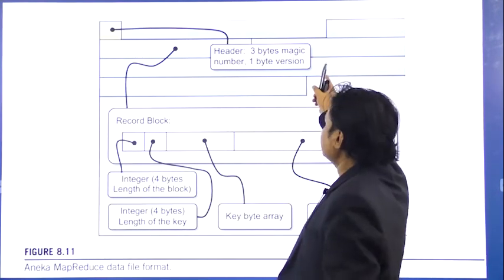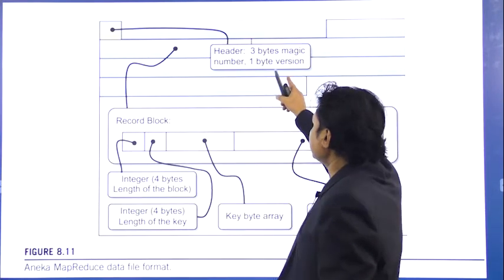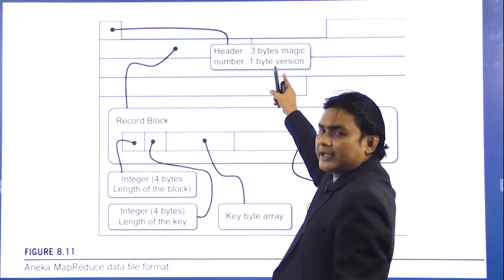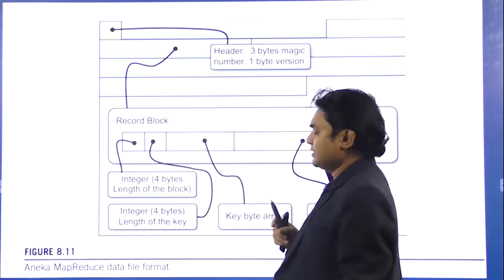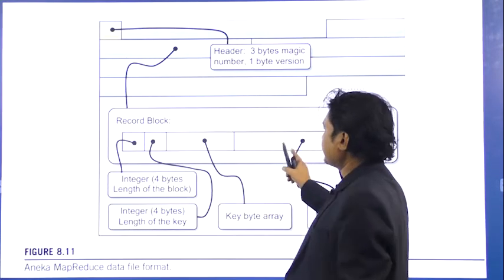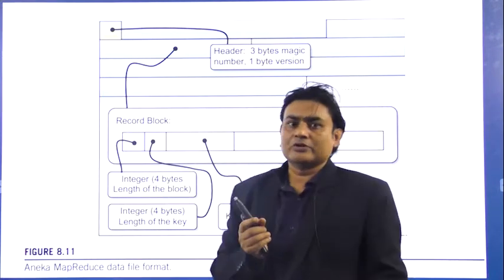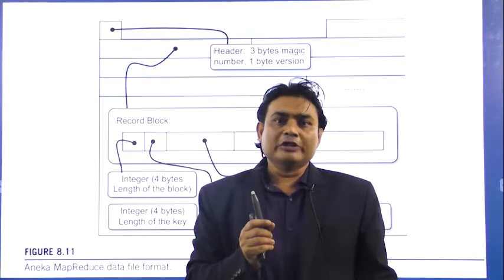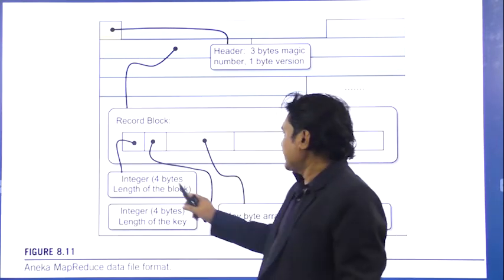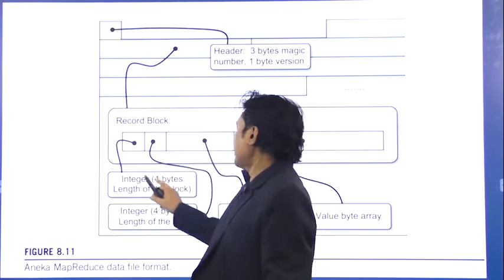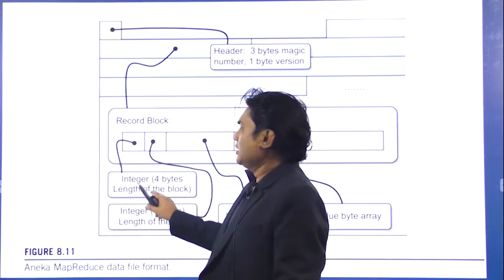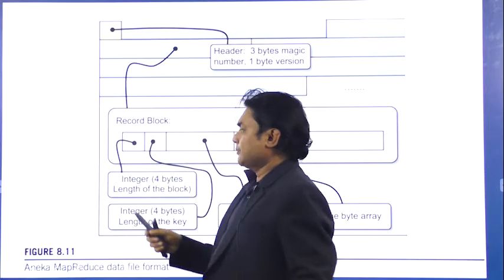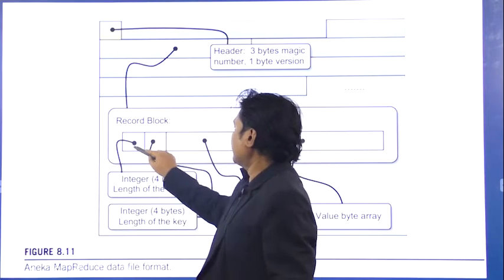The data will be represented in the forms of key-value pairs only. This part represents the header information, which consists of three bytes. This part holds one byte of information. This block part is the record block, because in block one you are going to store the actual data — the actual data stored in the forms of key-value pairs. This part contains the length of the block, represented in four bits.